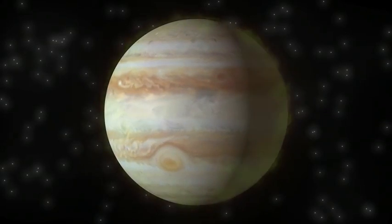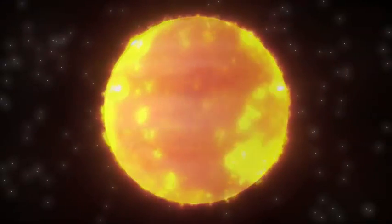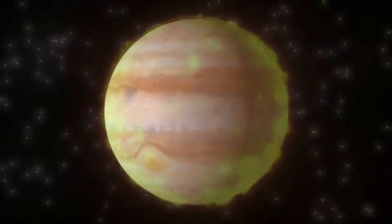Jupiter is huge. If it had only been a little larger, it could have become a brown dwarf star circling our Sun.